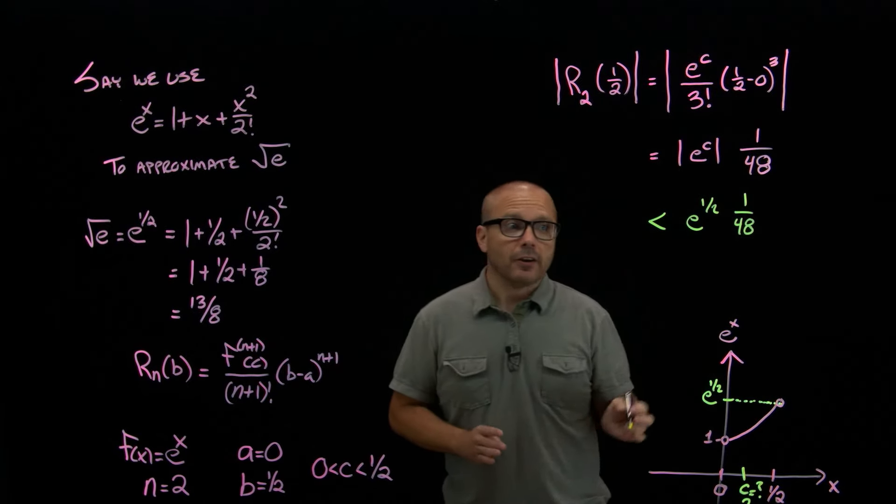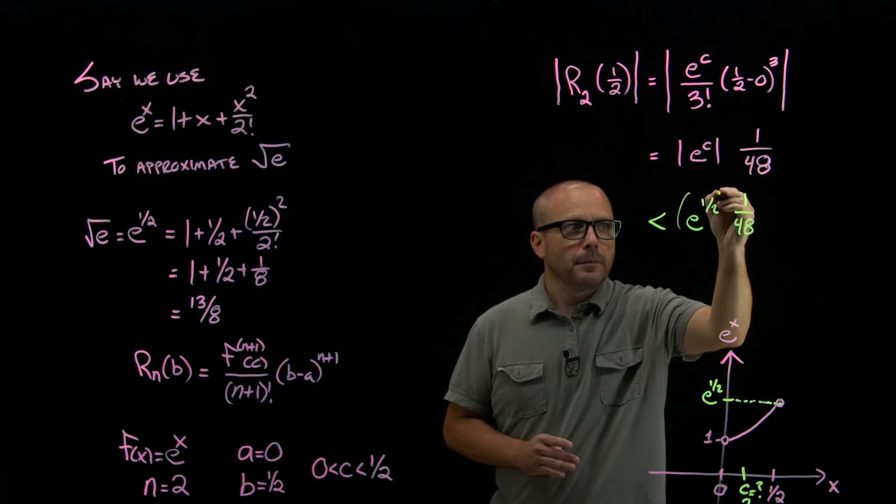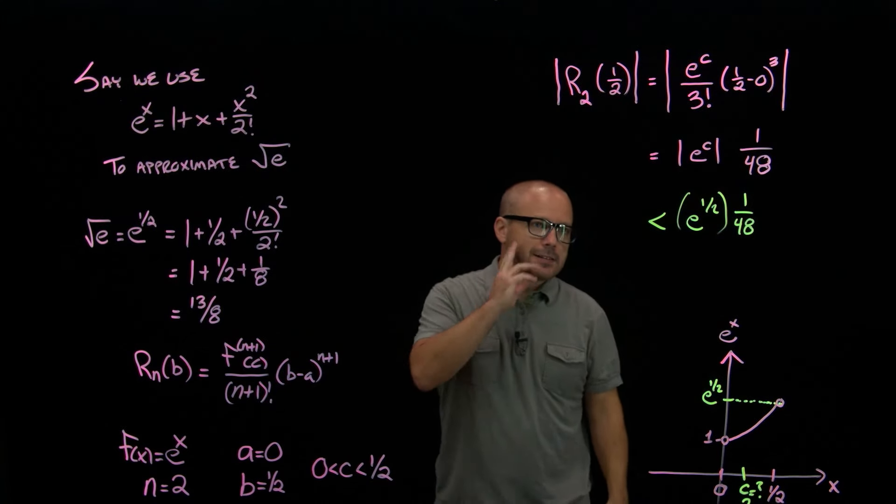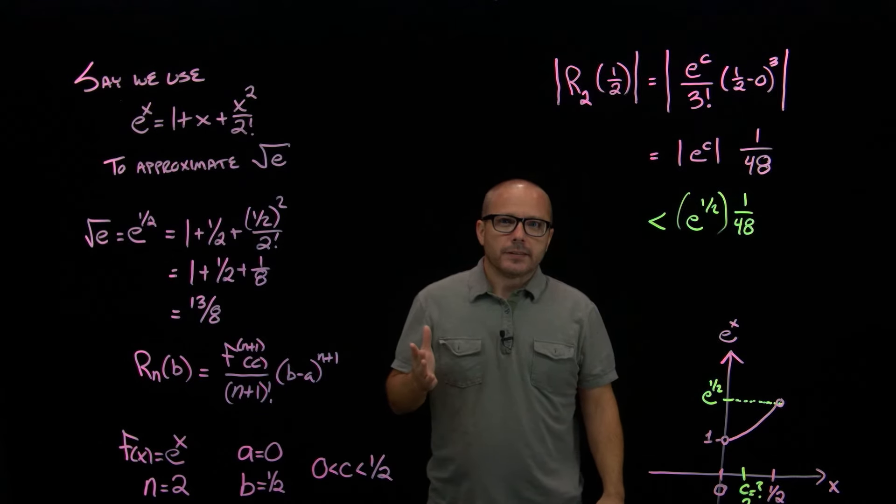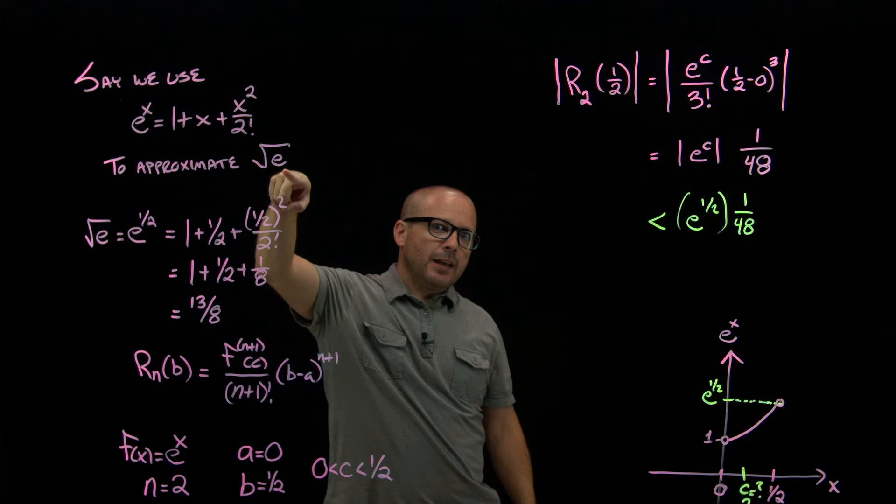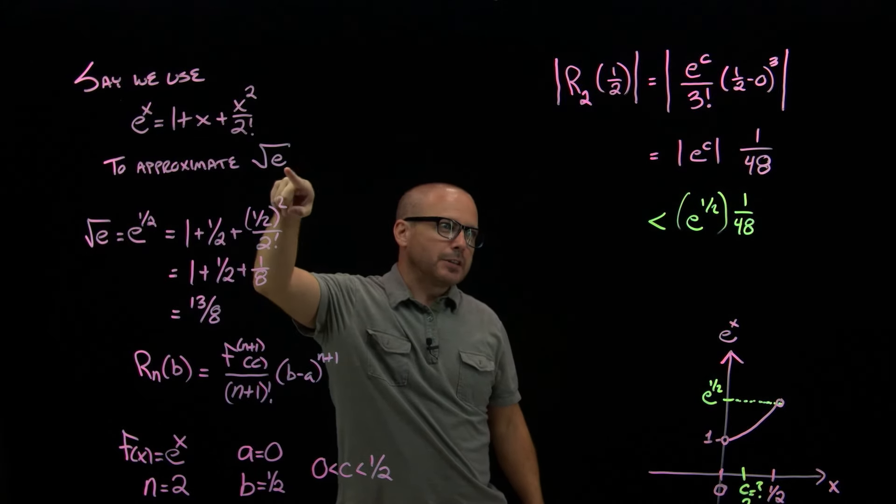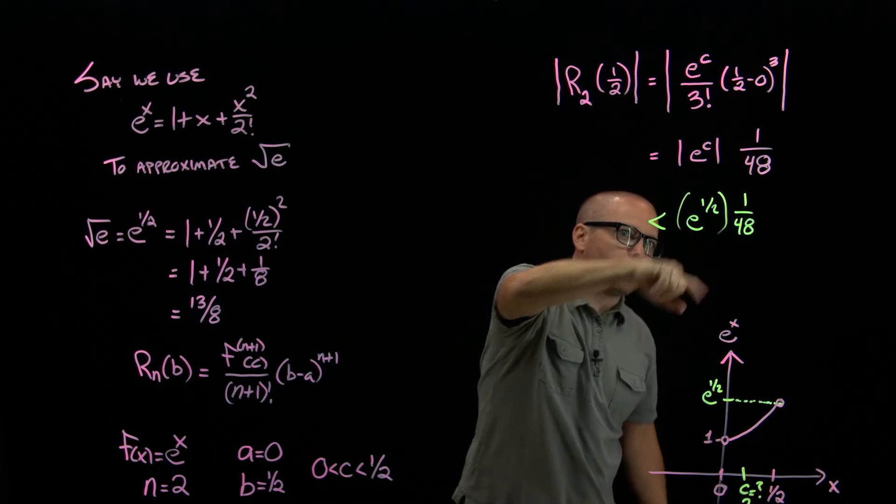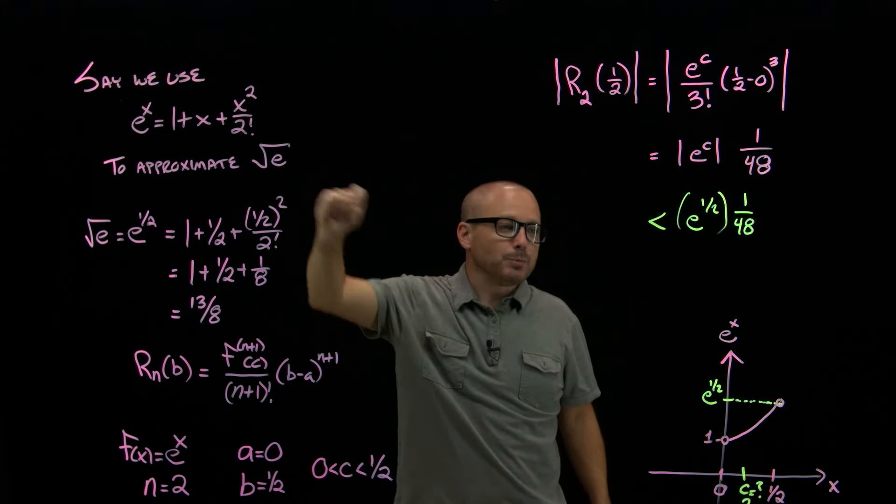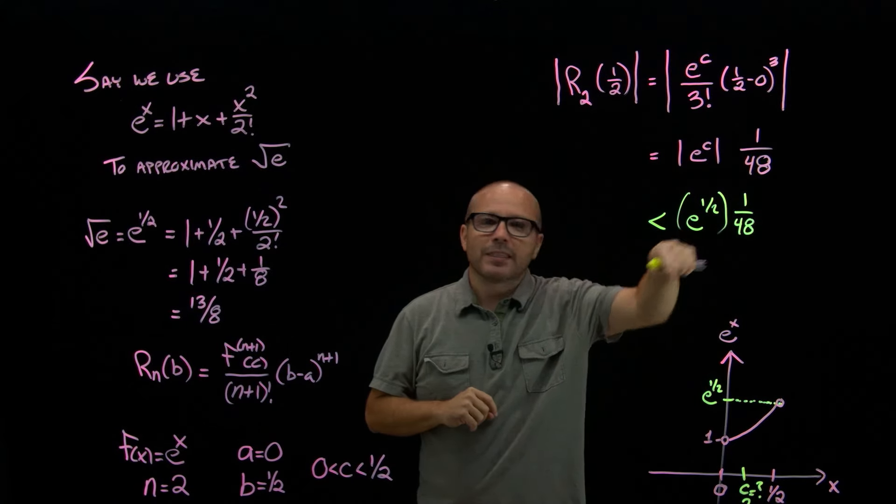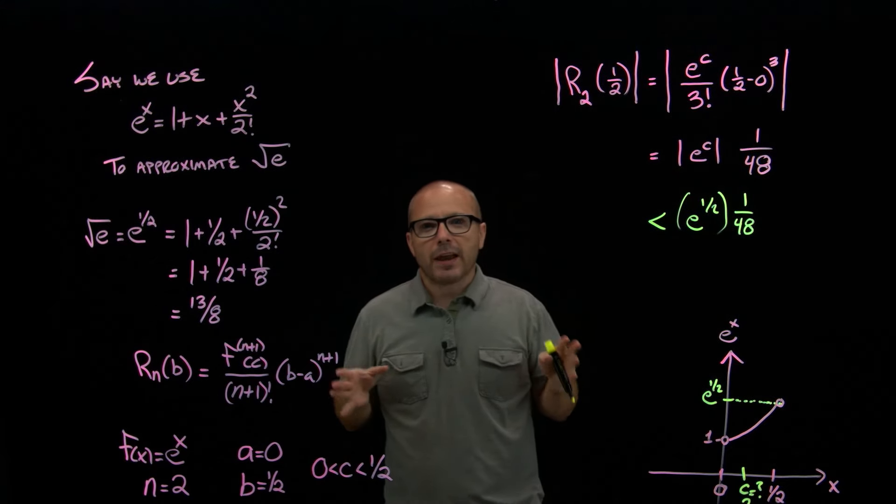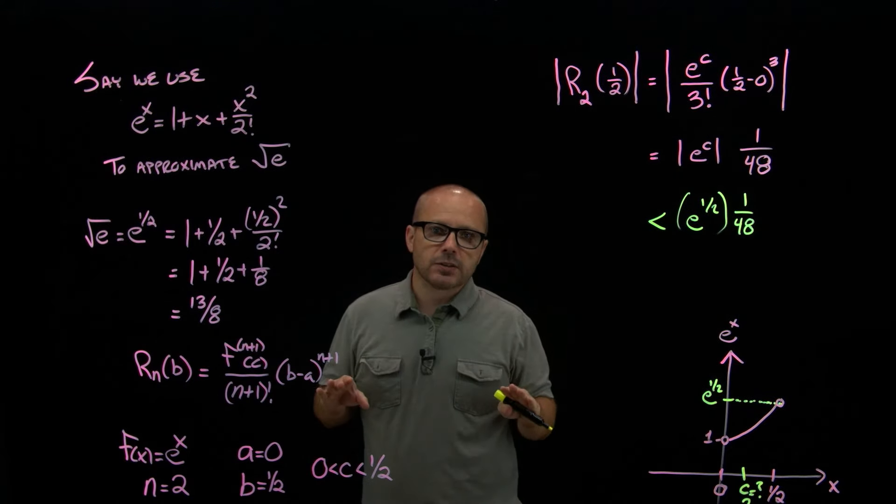So at this stage, I know that this quantity is less than e to the half times 1 over 48. So we've bounded our error at this point. But with e to the x, there's an added wrinkle. What was our whole point here? Our whole point was we wanted to approximate e to the half. And we just said that how good is our approximation of e to the half? Well, it's e to the half divided by 48. But what's e to the half? We don't know. That was the whole thing that we didn't know in the first place. So I don't want to write my error bound in terms of the thing I don't even know.